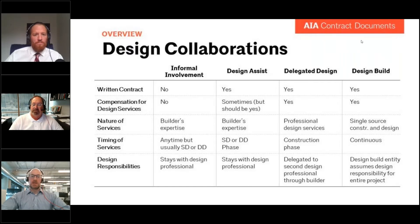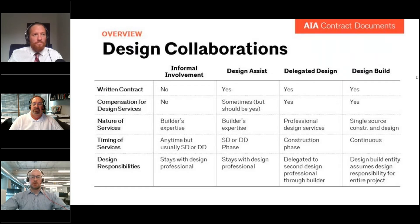Beyond establishing common terminology, once we got into what an agreement for design assist or delegated design actually looks like, we looked at how the information being provided is used on the project and how it needs to be tied into all the other agreements that define the process. For instance, if there is a governing prime agreement, are there provisions of that which should apply to companies providing those services? There were things like intellectual property rights that needed to be addressed, and also BIM documents — if you don't have an agreement, there's really no way to make those exhibits binding.